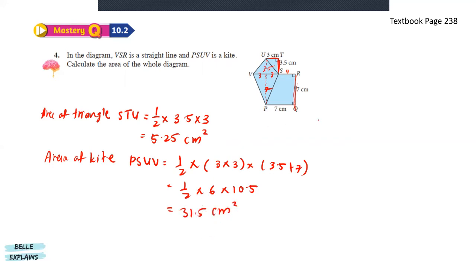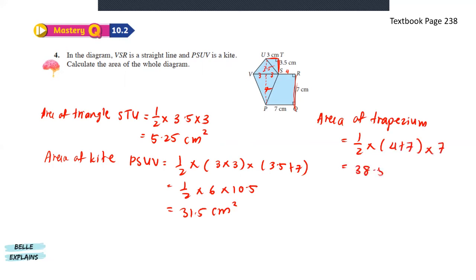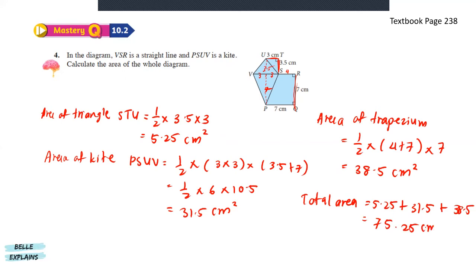Now for the trapezium: 1 over 2 times the sum of parallel lines — 4 plus 7 — times the height which is 7, giving 38.5 cm squared. The total area of the whole diagram is 5.25 plus 31.5 plus 38.5, which gives us 75.25 cm squared. Thank you for watching Bell Explains — do like and follow for more videos like this. Bye!